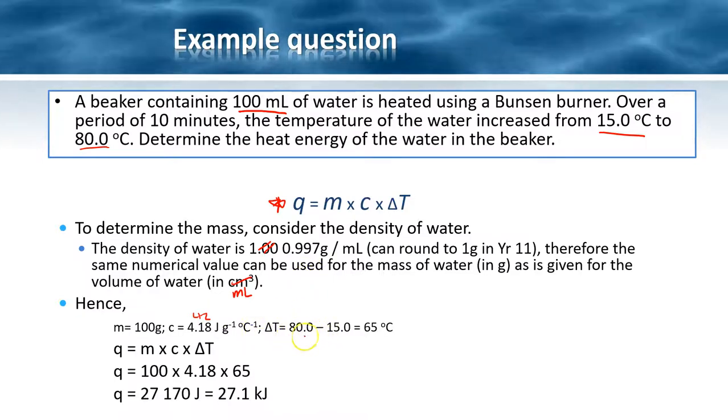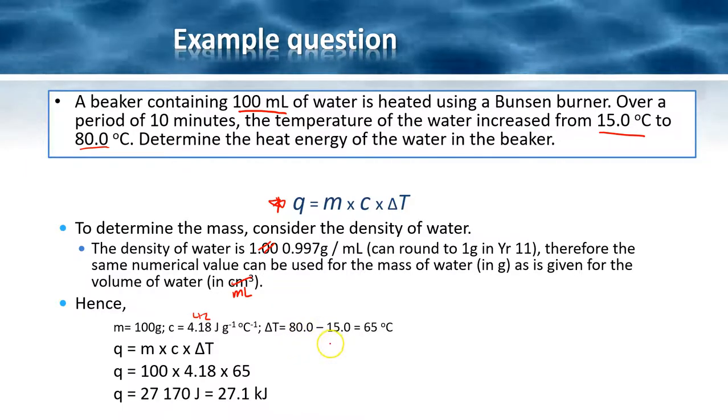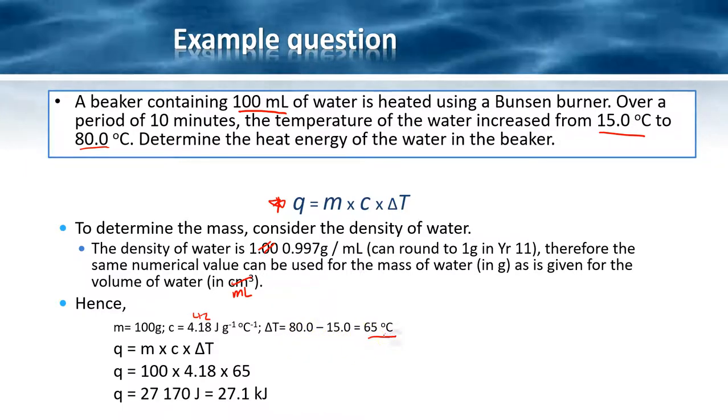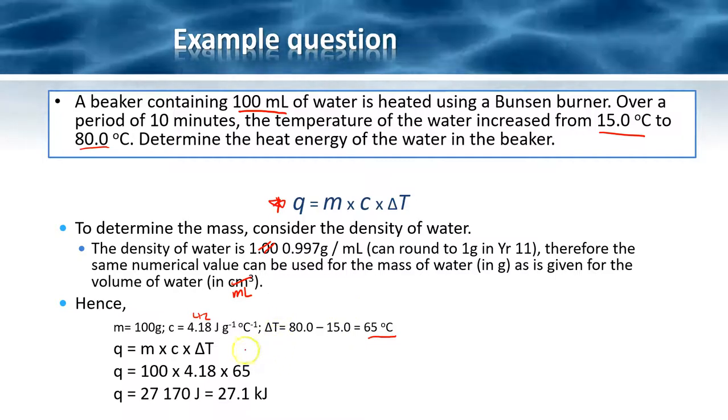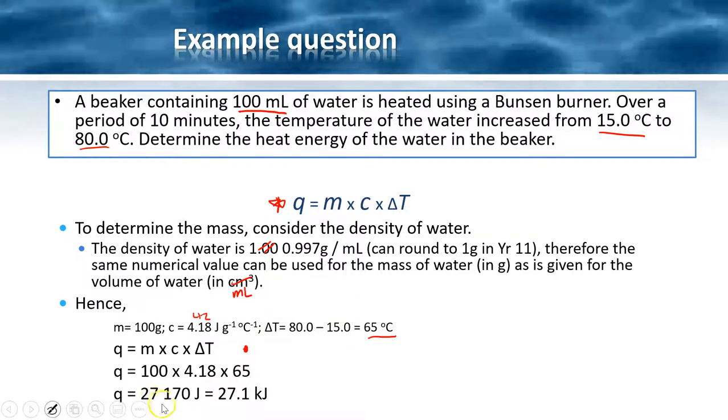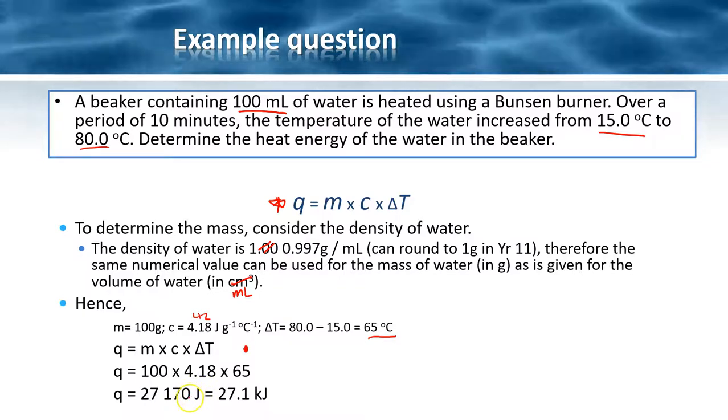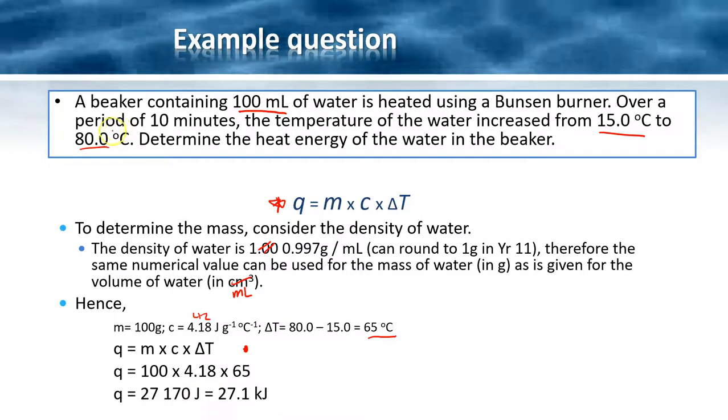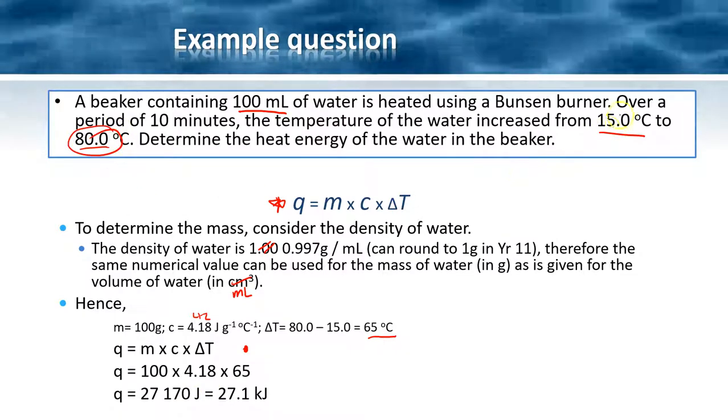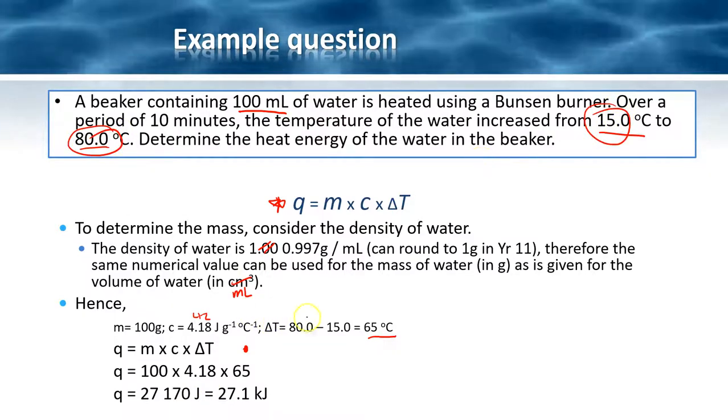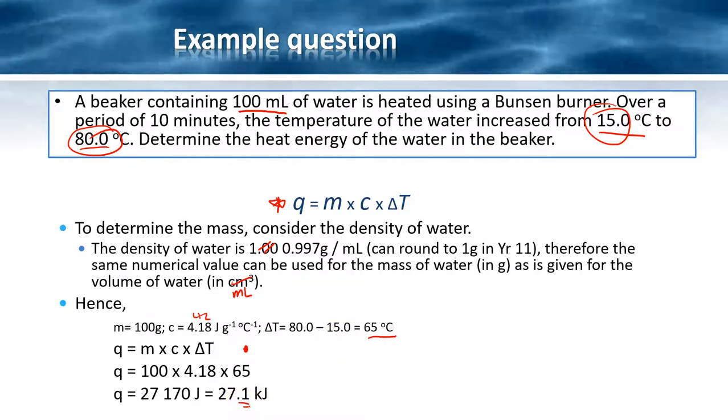Delta t is going to be our final temperature, which is 80, minus where we started at 15, which is 65 degrees C. Substitute all those into our equation and we will get 27,170 joules. We should have three significant figures for this one because we have three significant figures in each of the values, so 27.1 kilojoules.